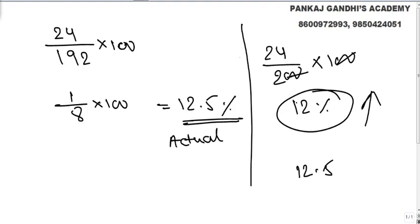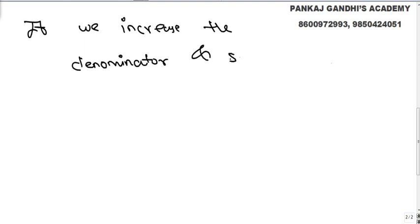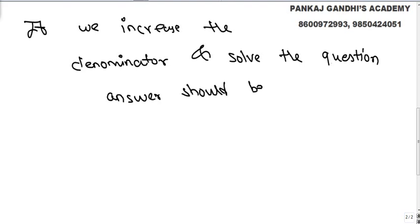The simple concept is: if the denominator is increased — for example, the actual denominator was 192 and we made it a round figure of 200 and solved it — then to get the actual answer, this answer should be increased. If we increase the denominator and solve the question, the answer should be increased.